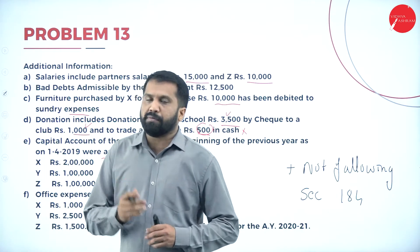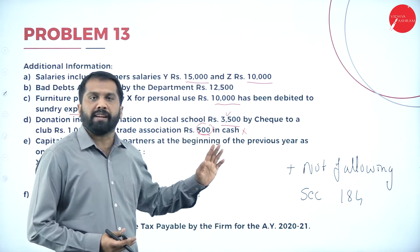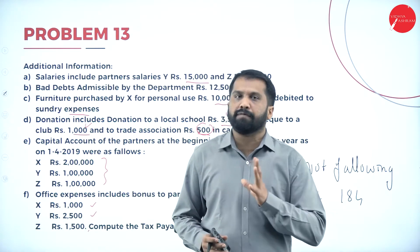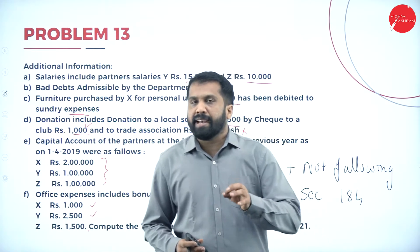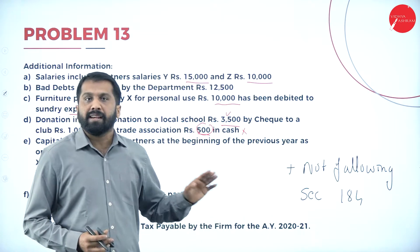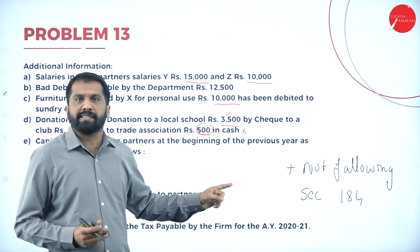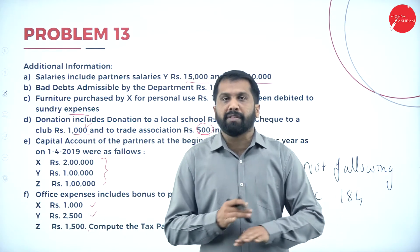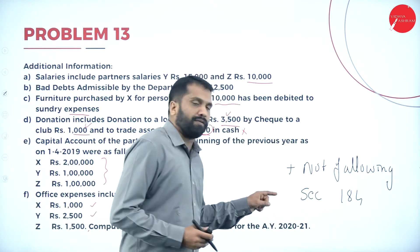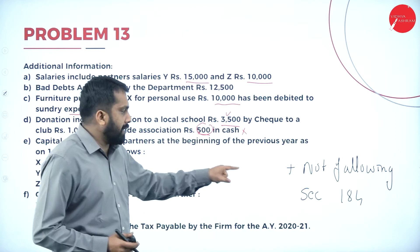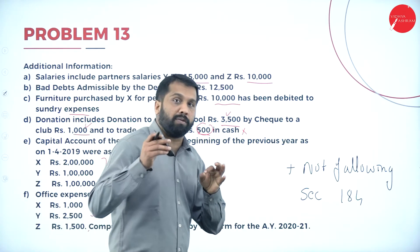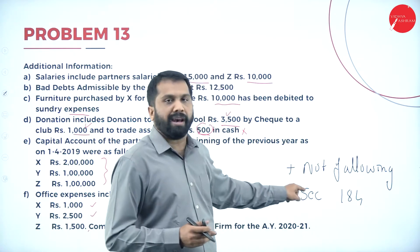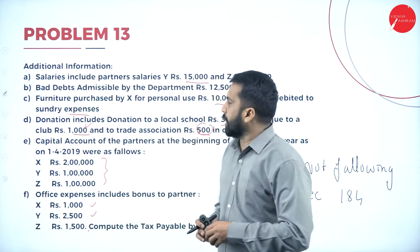One more important information: this problem is not following Section 184. The previous problem was following Section 184, but this one is not. Therefore, for interest on capital, the excess of 12 percent rule will not apply — we will not calculate it. I have added this extra adjustment because it was in your original last year question paper, even though it was not mentioned explicitly here.